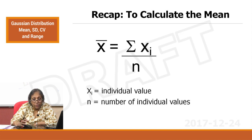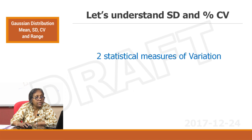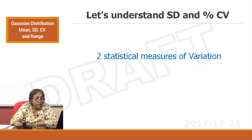We already talked about calculating the mean — it is a simple arithmetic average. Now let us look at standard deviation and CV together: SDs and the CV percent.